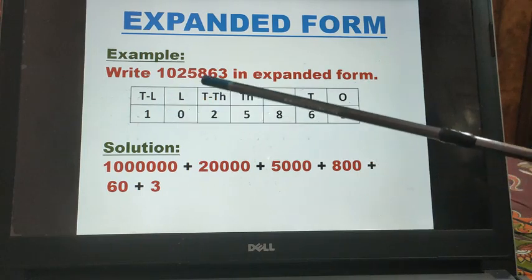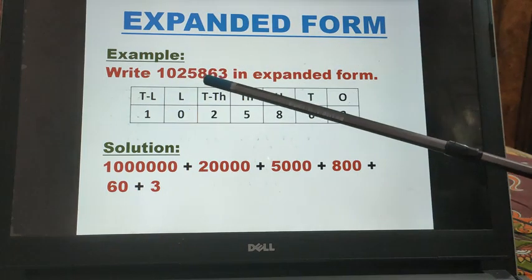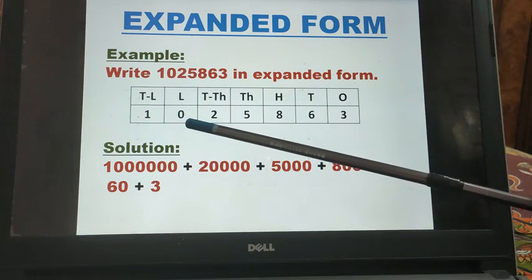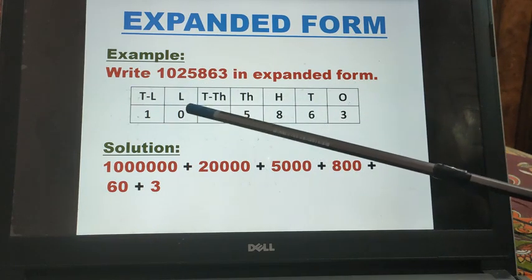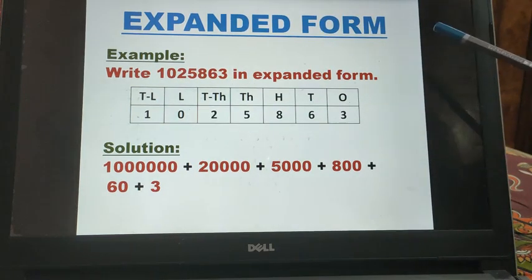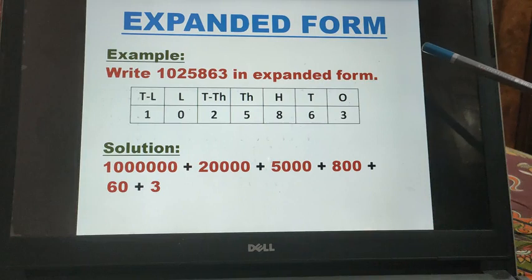Why we have missed it? Because this lakh place having 0. So whenever you have 0 at any place you can skip that place value and you can write the next place value.